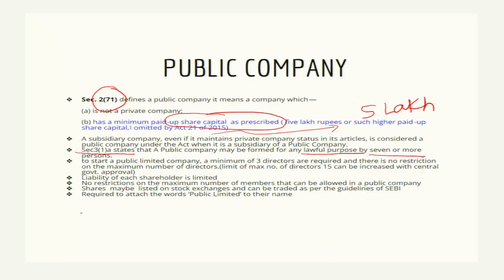Seven or more persons are required to incorporate a public limited company. To constitute a board of directors in a public limited company, minimum 3 directors are required as per section 149. There is no restriction on the maximum number of directors — the maximum limit is 15, but this limit may be increased with the permission of the central government on the requisition of the company.